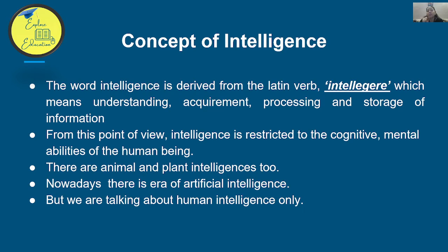There are animal and plant intelligences too. We talked in the previous video that non-human and human intelligence differ in degree, not in kind. Animals also have intelligence — chimpanzees, dogs, etc. Even plants have shown intelligence. And nowadays there is artificial intelligence — when we talk about machine intelligence, that is artificial intelligence. But here we are focusing on human intelligence.